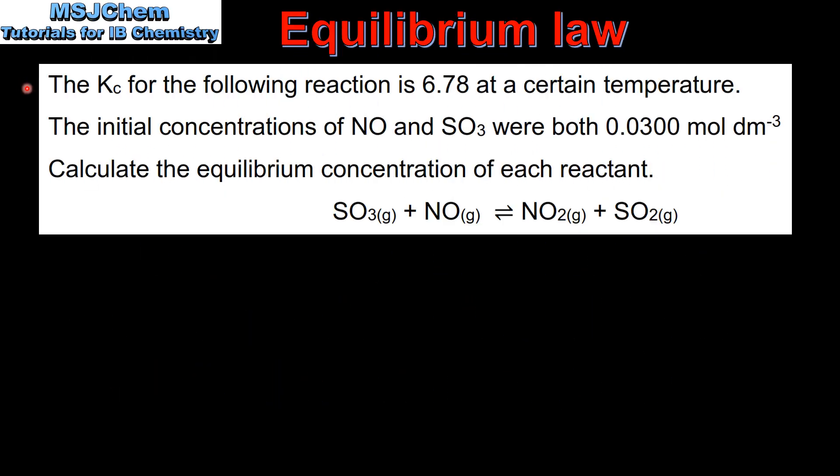Here's our example. The Kc for the following reaction is 6.78 at a certain temperature. The initial concentrations of NO and SO3 were both 0.0300 moles per decimeter cubed. Calculate the equilibrium concentration of each reactant.